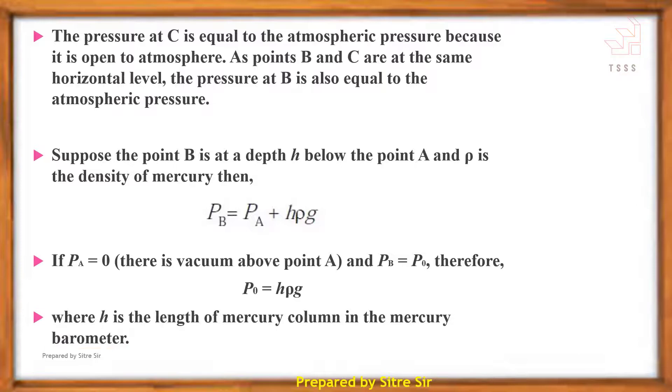In the mercury barometer, H is the length of the mercury column. This gives us the formula for atmospheric pressure: P = H·rho·g, where H is the height of the mercury column, rho is the density of mercury, and g is acceleration due to gravity.